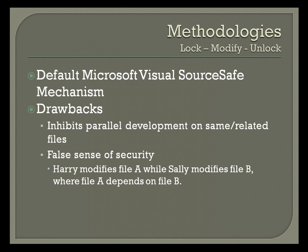One drawback is that it inhibits parallel development on the same or related files. Even with files that have dependencies, it creates a false sense of security — 'if they're locked, I can't screw anything up.' But if two people are working on dependent files, they aren't locked, so they both work independently. Once they commit, nothing works anymore because of this false sense of security.